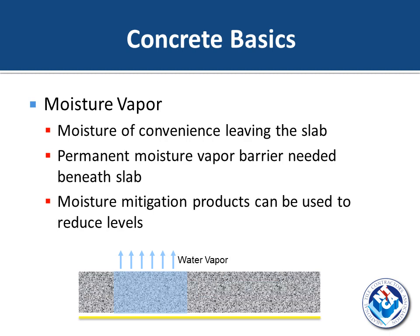The other source of moisture to deal with is moisture vapor. Unlike liquid moisture that pools under flooring, moisture vapor is the moisture of convenience or any external source of moisture that leaves the slab. A permanent moisture vapor barrier is needed beneath the slab, as shown here. Certain products have limitations on MVER — moisture vapor emission rate — and percent RH, or percent relative humidity.